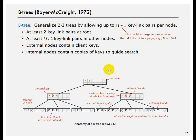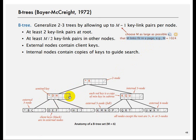In B-trees, instead of having just one key per node, you can have more than that. The idea is to consider a page in memory — a page that you can read from disk. Let's say the page has 128 bytes; you may want to store all of that as keys. So m is the number of keys you can store, and m minus 1 links fill into a page, giving m minus 1 children to each parent node.